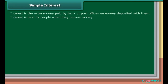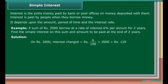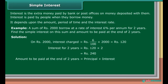Simple interest: Interest is the extra money paid by a bank or post office on money deposited with them. Interest is paid by people when they borrow money. It depends upon the amount, period of time, and the interest rate. Example: A sum of Rs. 2,000 borrowed at a rate of 6% per annum for 2 years. Find the simple interest and the amount to be paid at the end of 2 years. Solution: On Rs. 2,000, interest charged is equal to 6 upon 100 into 2,000, which is equal to Rs. 120. Interest for 2 years is equal to Rs. 120 into 2, which is equal to Rs. 240. Amount to be paid at the end of 2 years is equal to principal plus interest, which is equal to Rs. 2,000 plus 240, which is equal to Rs. 2,240.